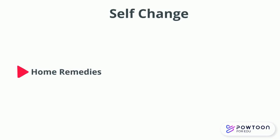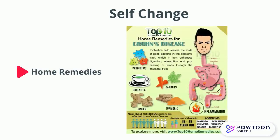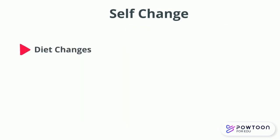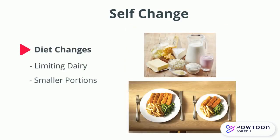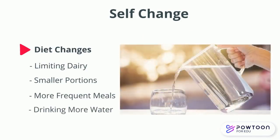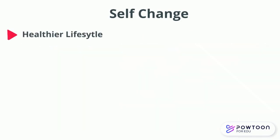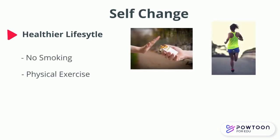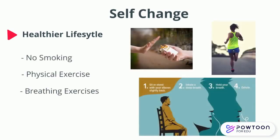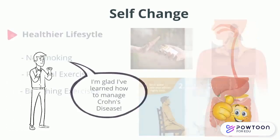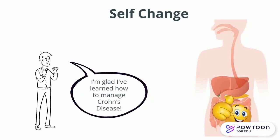There are also home remedies that can make this illness more manageable, and these can also be used by those who don't have Crohn's disease to prevent it from occurring. Diet changes such as limiting dairy, eating smaller but more frequent meals, and drinking plenty of water allow the bowels to rest as they're easy to digest. Leading a healthier lifestyle by not smoking, doing physical exercise, and doing breathing exercises are great ways to stay healthy. Overall, keeping one's digestive system and overall well-being healthy can greatly reduce one's risk of getting Crohn's disease.